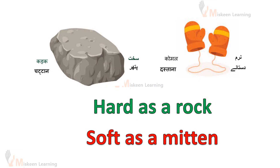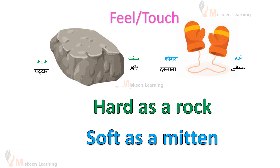Hard as a rock — eek puther ki tira, hudak, sakt. Soft as a mitten — haat ke dastanon ki tira, naram mulayam. Yahaan per comparison kis cheese ka ho raha hai? In ki throonay se joh hume aahsas hota hai — we are comparing texture, how things feel to the touch.